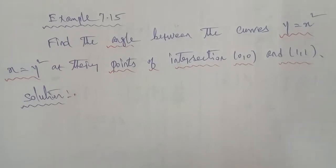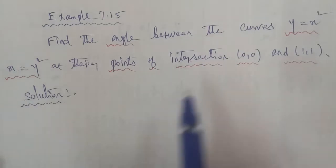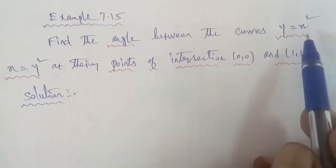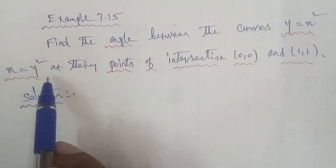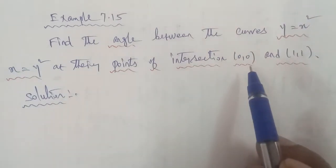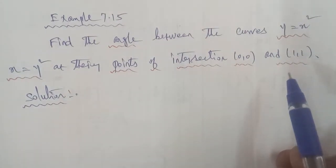Hi students, I am Gopinath. 12th maths, exam was 7.15. Find the angle between the curves y is equal to x square, x is equal to y square and their points of intersection (0,0) and (1,1).